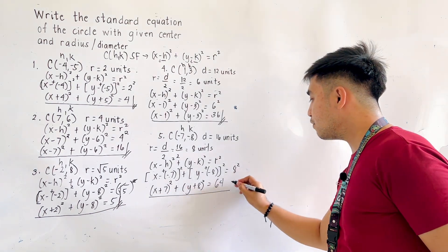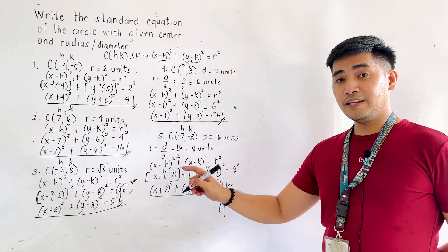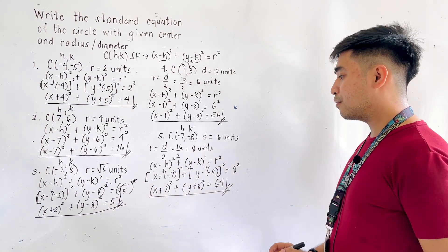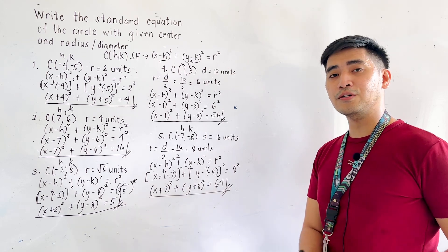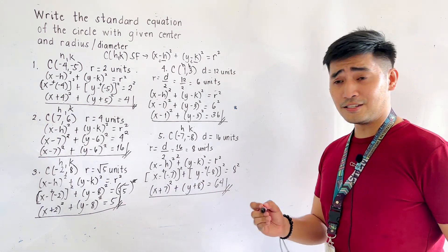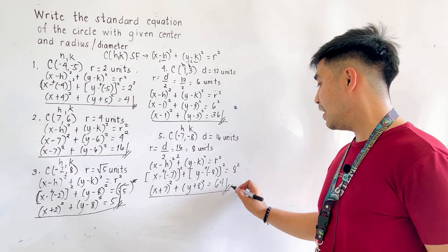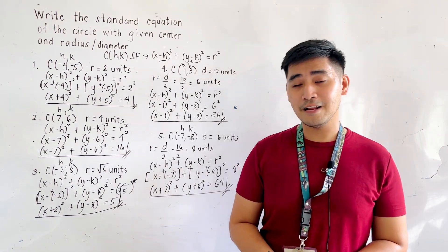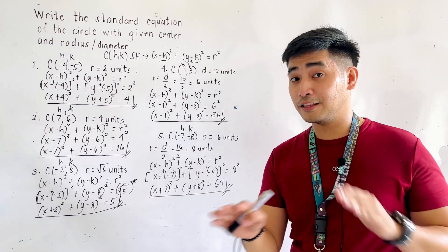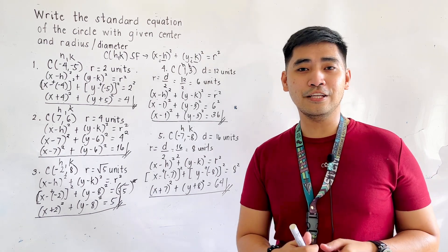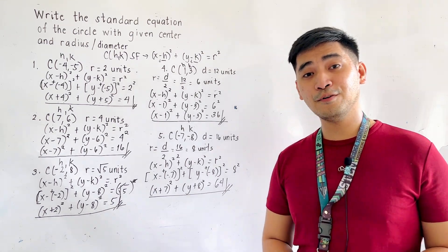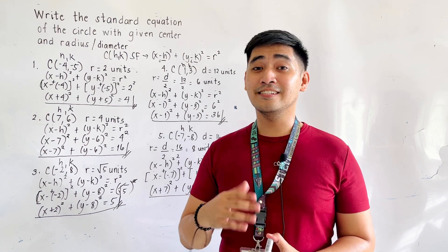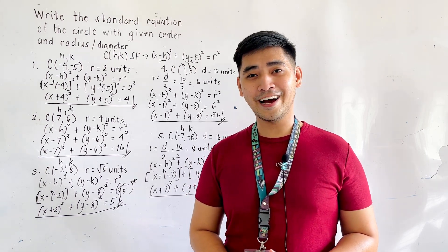Therefore, if the center is at (negative 7, negative 8) and the diameter is 16 units — giving radius of 8 units — the standard equation is x plus 7, quantity squared, plus y plus 8, quantity squared, is equal to 64. That is how we write the standard equation of the circle given center (h, k) and either the radius or diameter. If given the diameter, divide by 2 to get the radius. Once again, I am Engineer John Edward Hernandez, saying that mathematics is always fun. Goodbye and God bless.